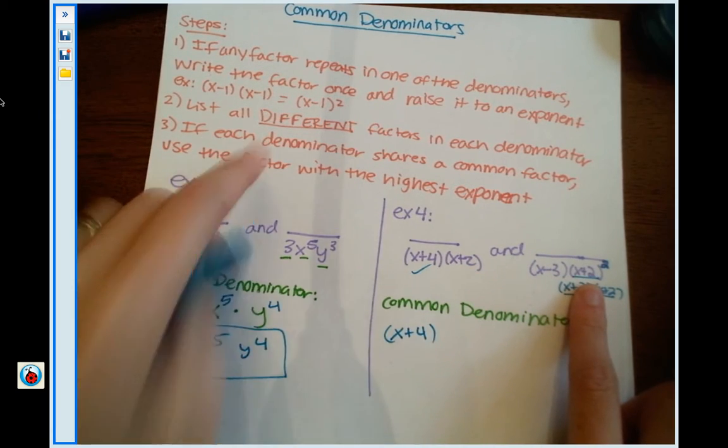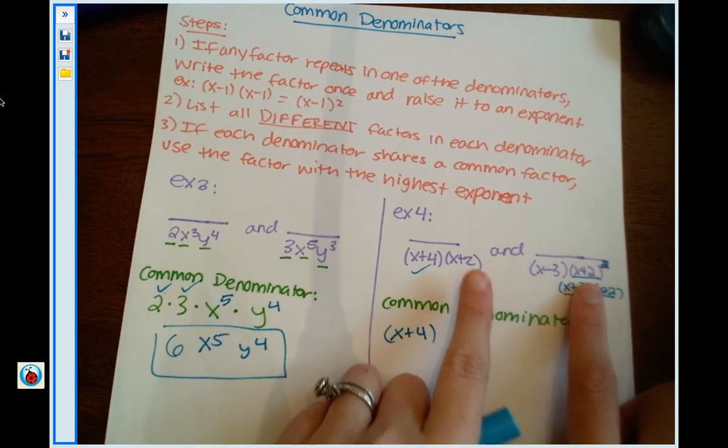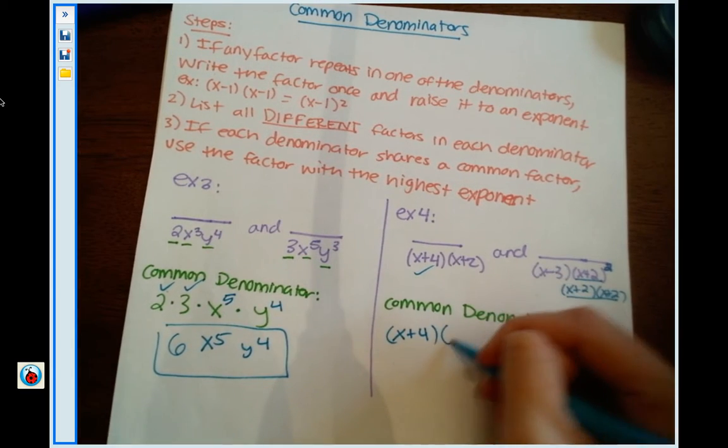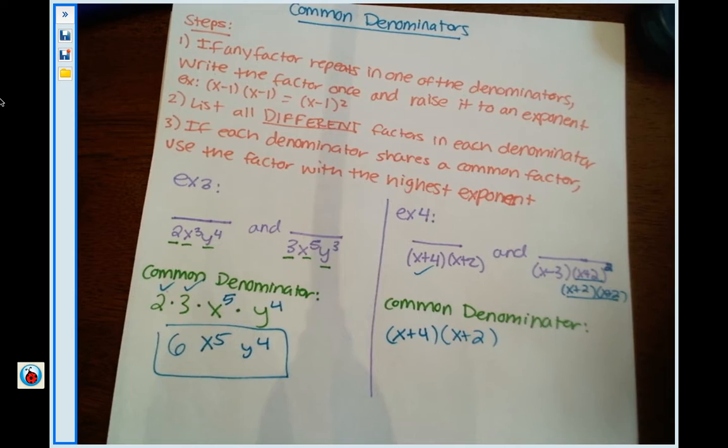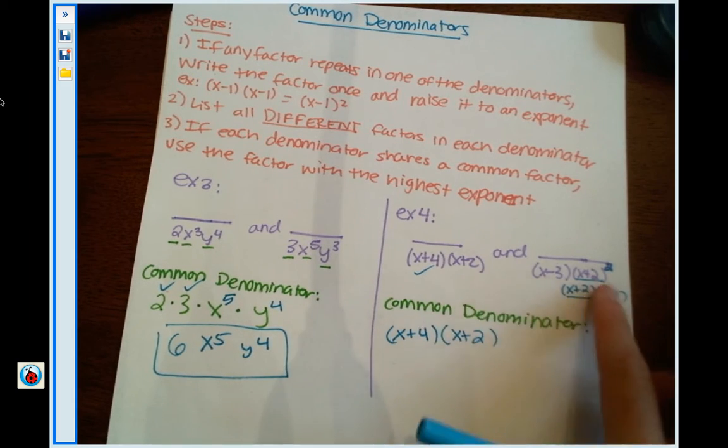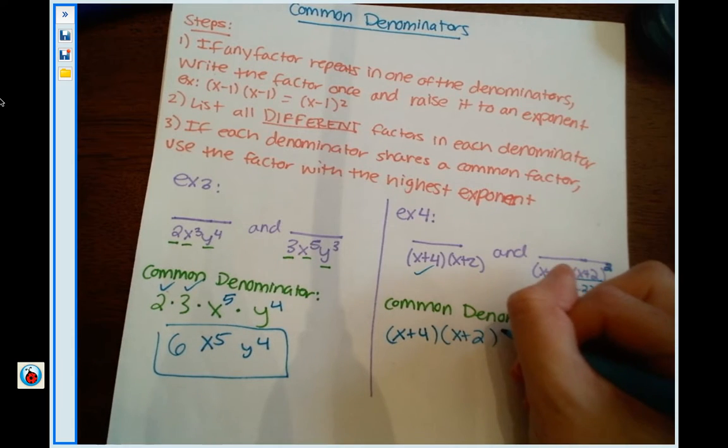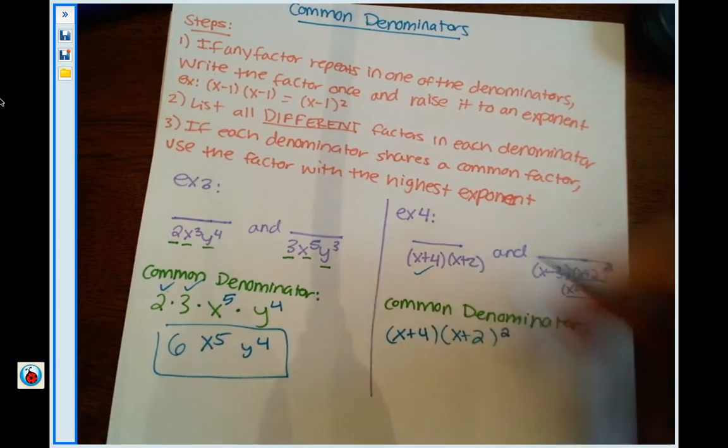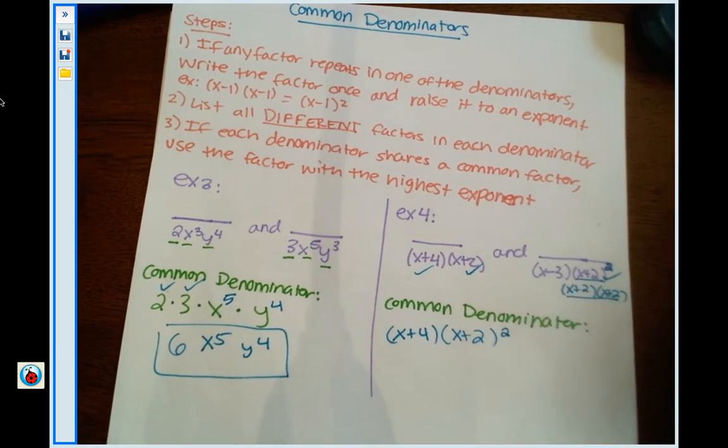Well, looking at step 3, you have to pick the one with the highest exponent. So I'm going to have x plus 2, because those are both in common between my denominators, but the one with the highest exponent is the one that's squared. So I'm going to write x plus 2 squared.